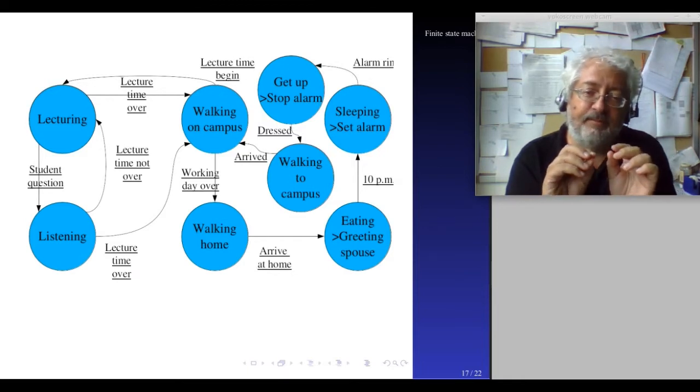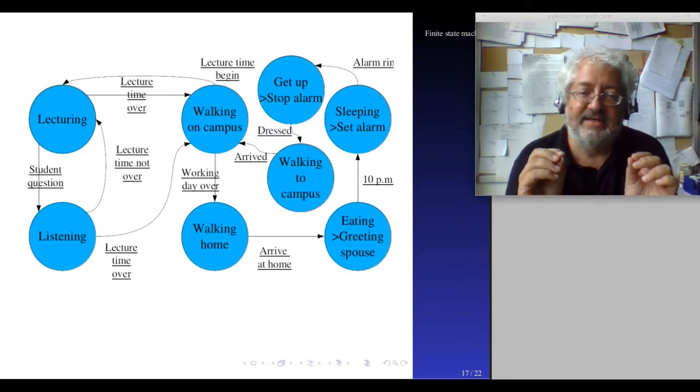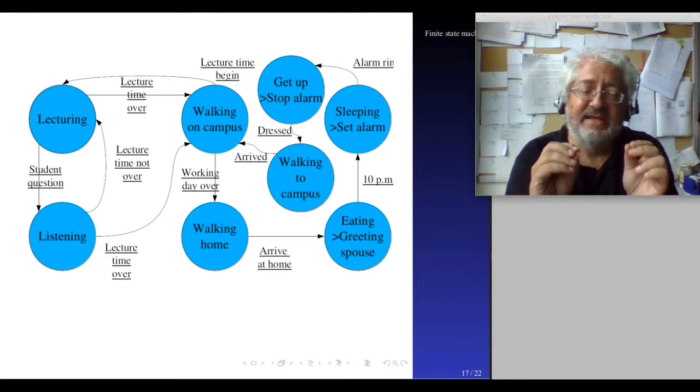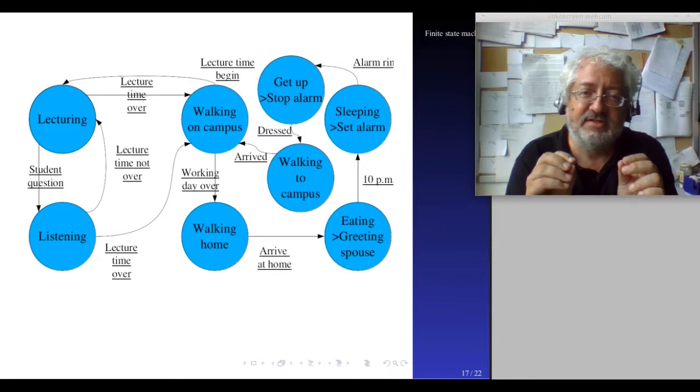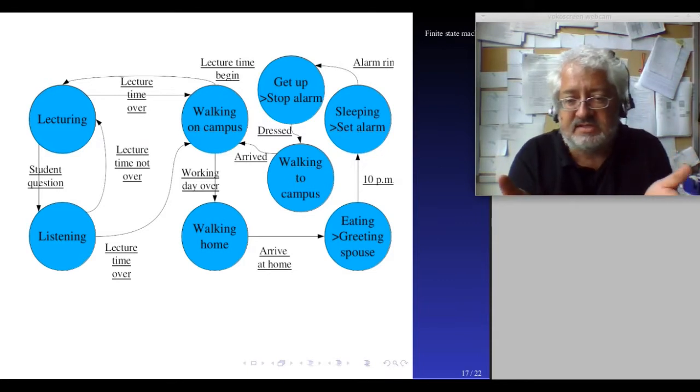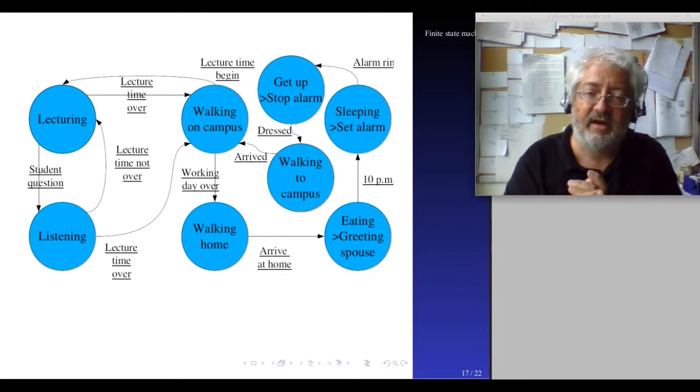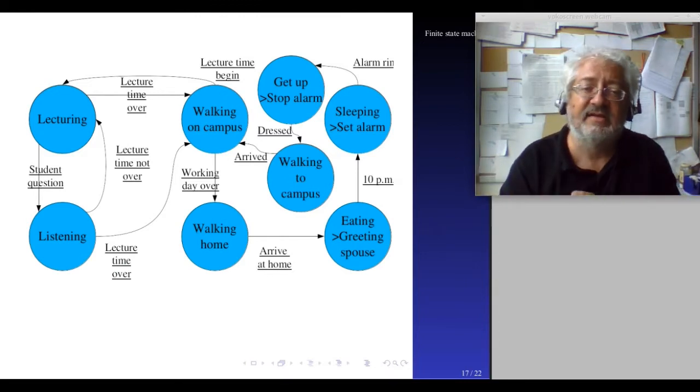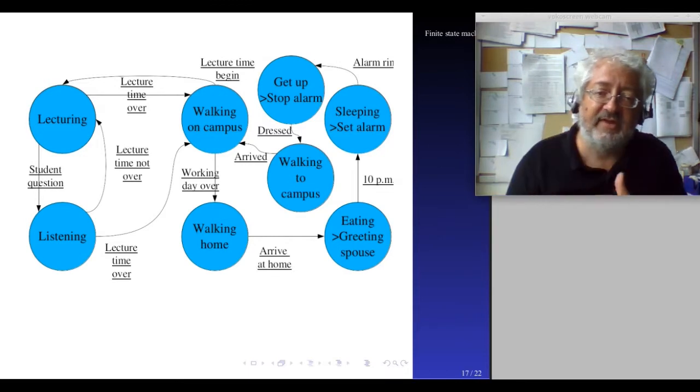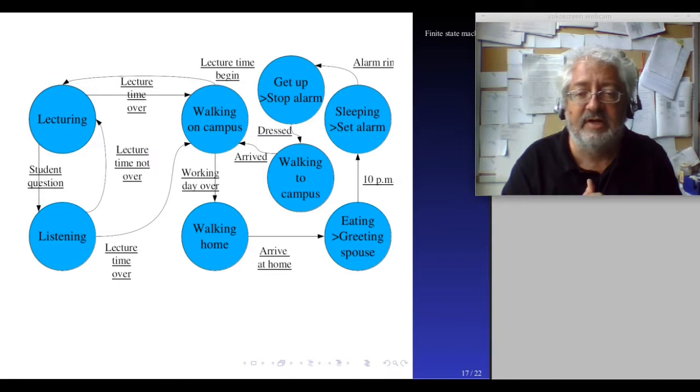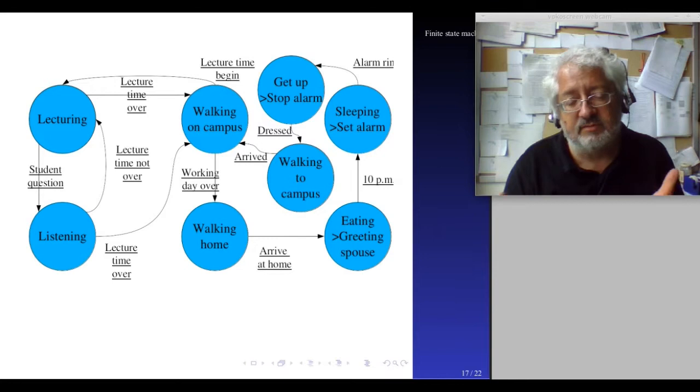It has the nice property of being easily transferable into a computer program. These states and these transitions can be states in a computer program that can be directly programmed there with a variable that keeps the state, and functions that represent the transitions which change the value of this variable. So this is trivial to make it a computer program. And then this computer program would describe the behavior of the system.